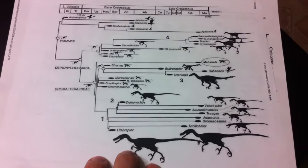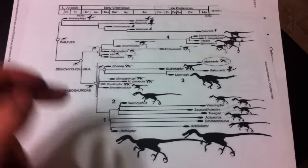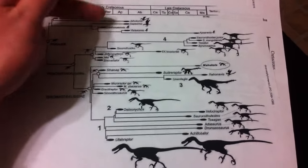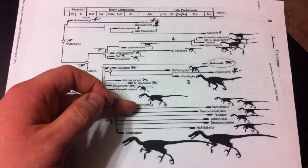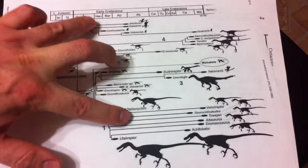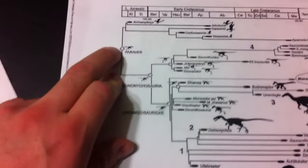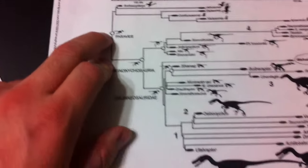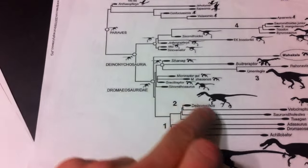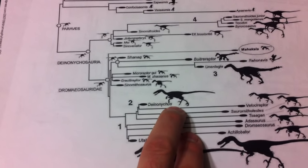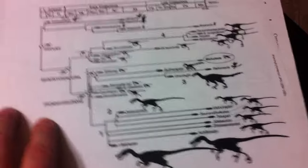Now, when we do this, we can then ask ourselves, all right, where are we seeing asymmetric flight feathers? Well, it turns out that we see them in all three of these lineages, which suggests that their common ancestor also possessed asymmetric flight feathers, which means that the ancestors of Deinonychus could fly. And Deinonychus is actually a secondarily flightless animal. So, that's interesting. We're learning some things.